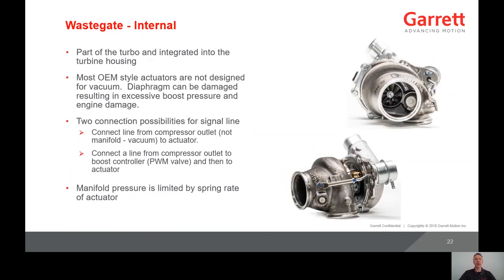There are two types of wastegates: internal and external. Internal wastegates are part of the turbocharger and integrated into the turbine housing. Most OEM-style actuators are not designed for vacuum. Vacuum can damage the diaphragm, which could lead to excessive boost pressure and engine damage. There are two options to connect the signal line to ensure only positive pressure goes to the actuator: connect the line from the compressor outlet to the actuator, or the compressor outlet to a boost controller and then to the actuator. Using a boost controller will enable finer boost control than using just the actuator. Keep in mind, intake manifold pressure is limited by the spring rate of the actuator, so if using a boost controller and you still cannot increase the peak boost pressure, most likely an actuator with a stiffer spring will be required.